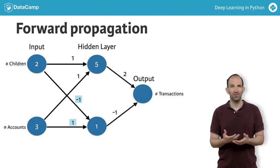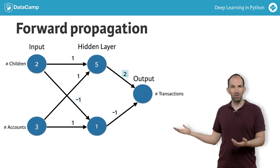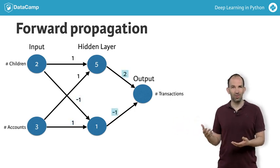Finally, we repeat this process for the next layer, which is the output layer. That is 5 times 2 plus 1 times minus 1. That gives an output or prediction of 9. So we predicted 9 transactions.